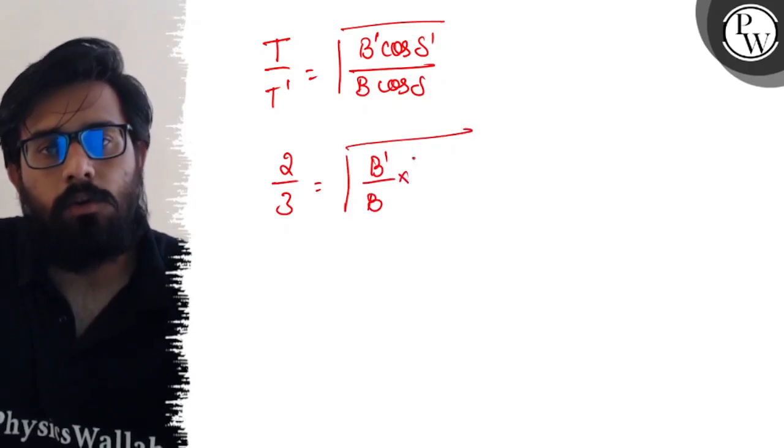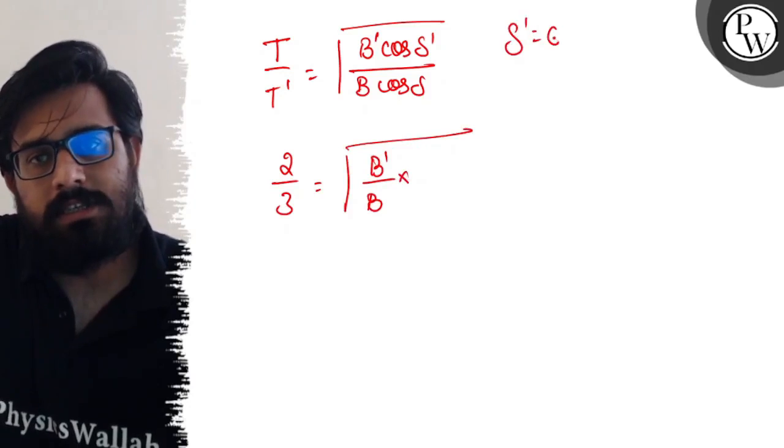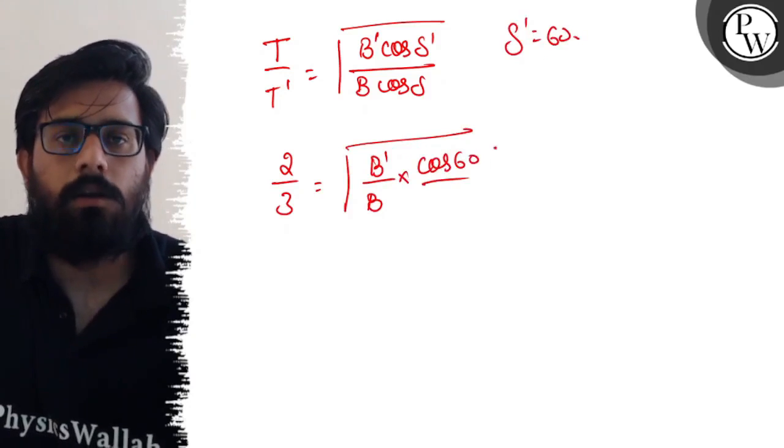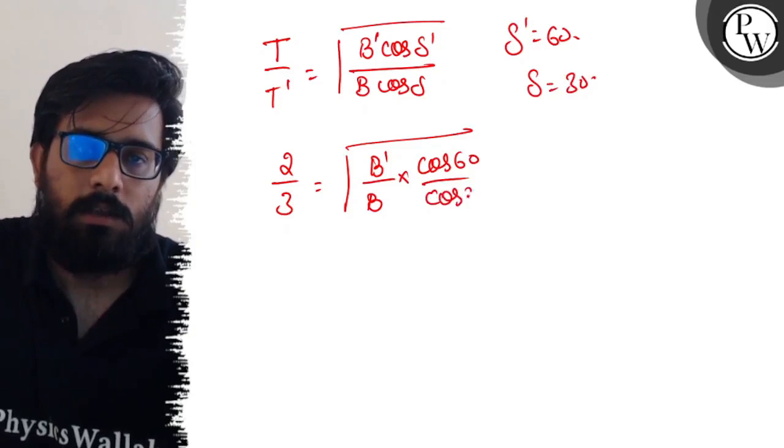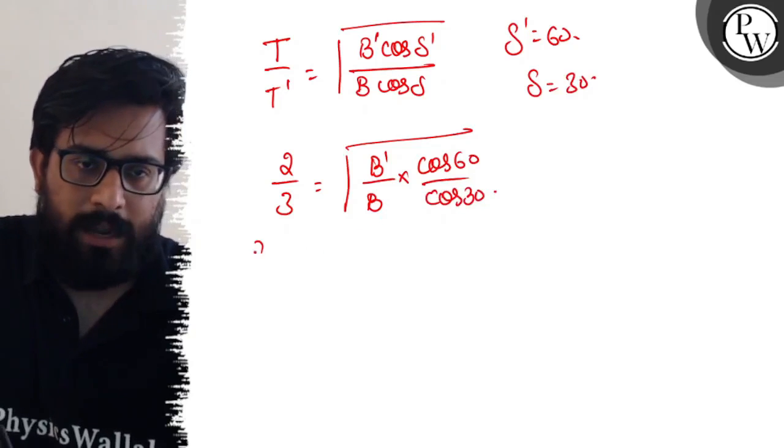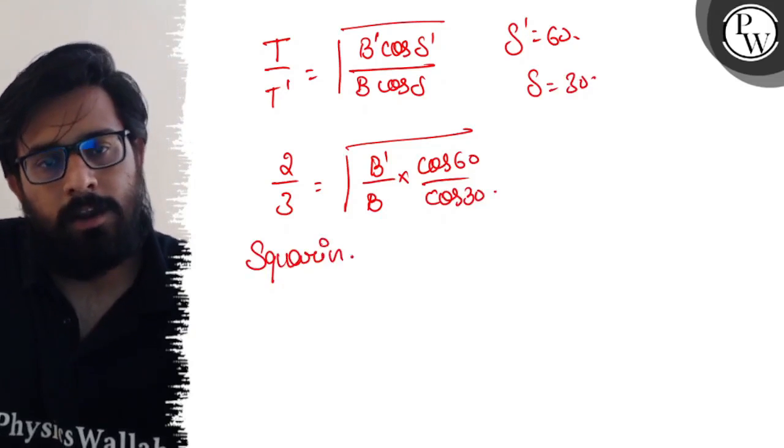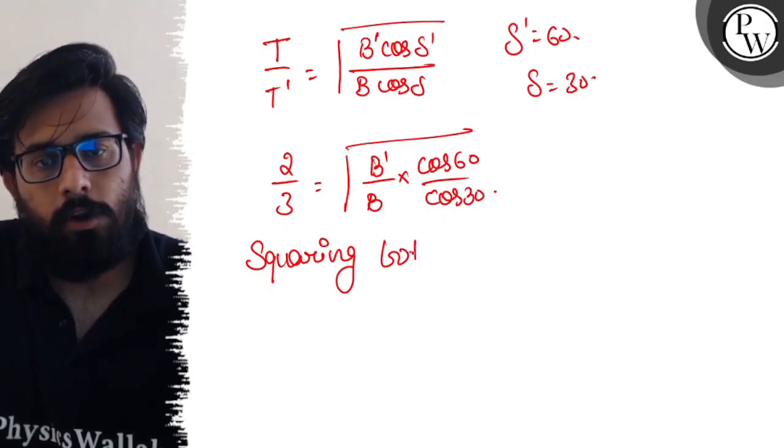δ is 30 degrees so it can be written as cos 30 degrees. Squaring both sides, we get 4/9 equals B'/B times (cos 60)/(cos 30).